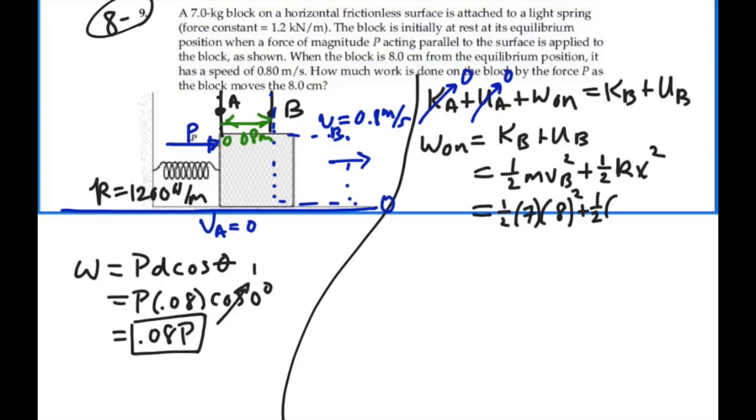plus one-half K, which is 1,200, times X, which is the distance we moved and stretched the spring as well, which is 0.08 meters squared. So what is this? This is 2.24 plus 3.84, which gives us 6.08 joules.